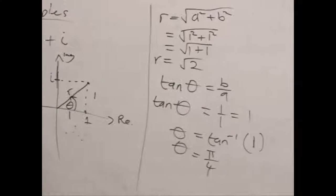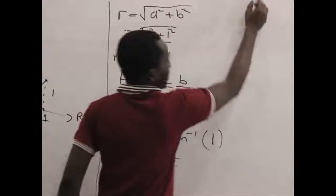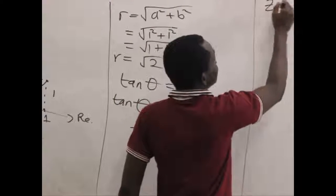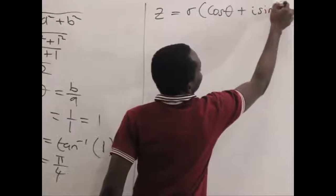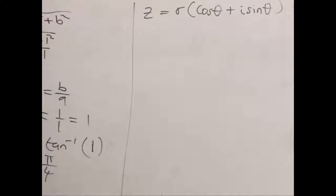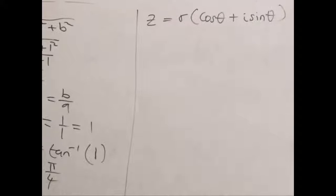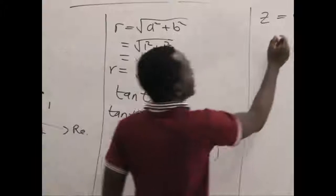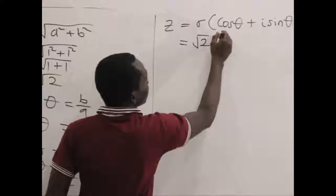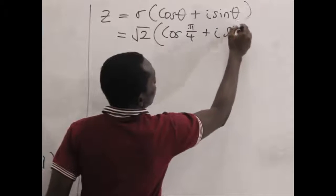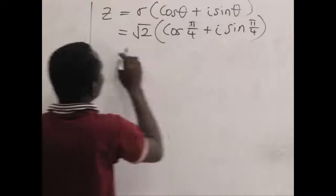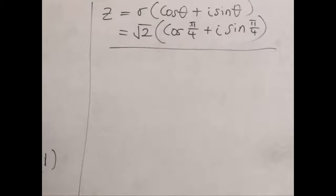So with this we can find the polar form. Now we know in polar form we have z to be equal to r cos theta plus i sin theta. And we know our r to be root of 2, and we know our theta to be pi over 4. So we substitute them into the relation. So this becomes the polar form of the complex number 1 plus i.